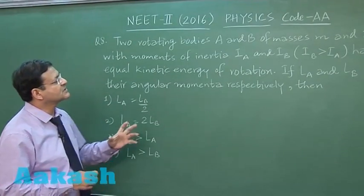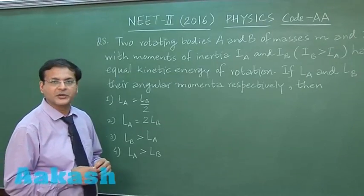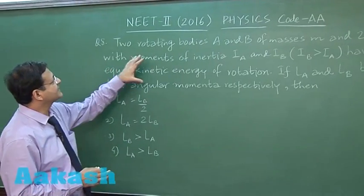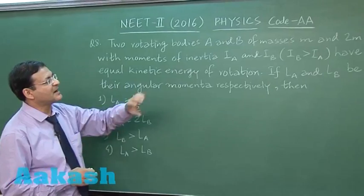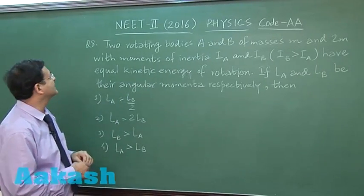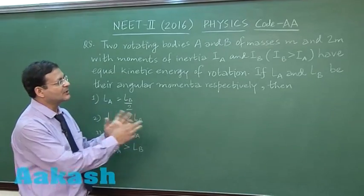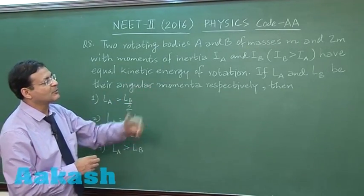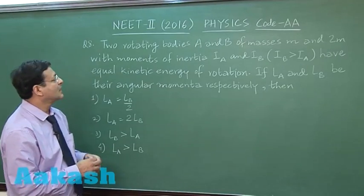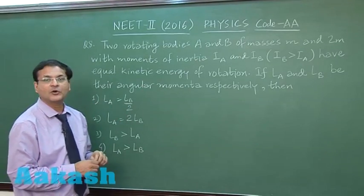Now this question 8 is on rotational motion. Two rotating bodies A and B of masses m and 2m with moments of inertia IA and IB are given. The relation of moment of inertia is also given - B has larger moment of inertia compared to A - and they have equal kinetic energy of rotation.